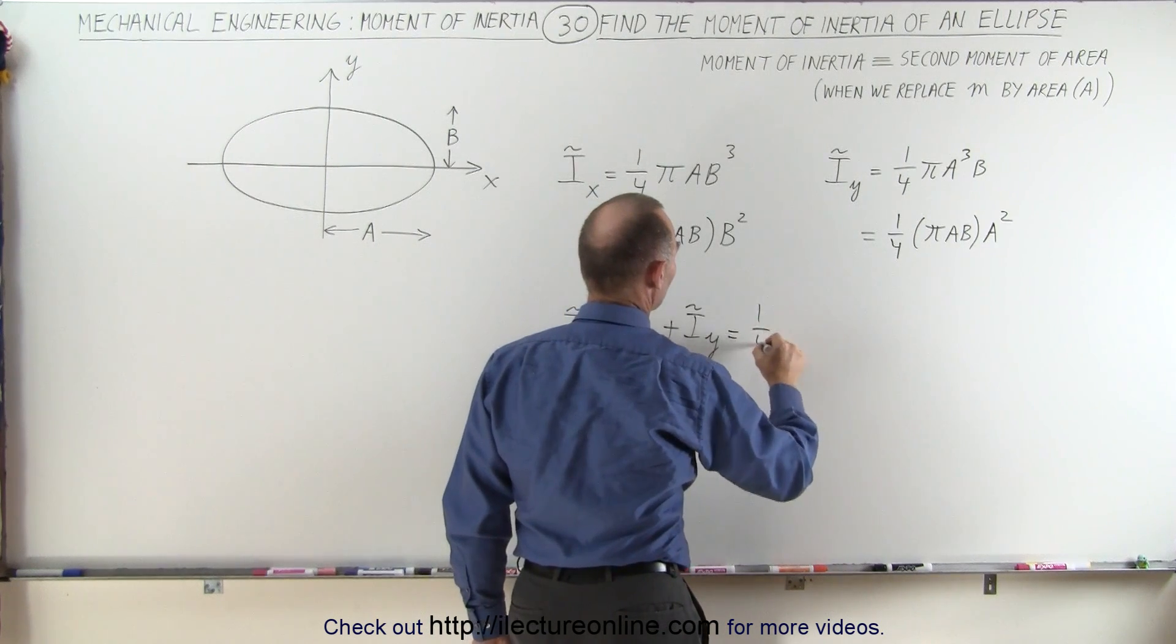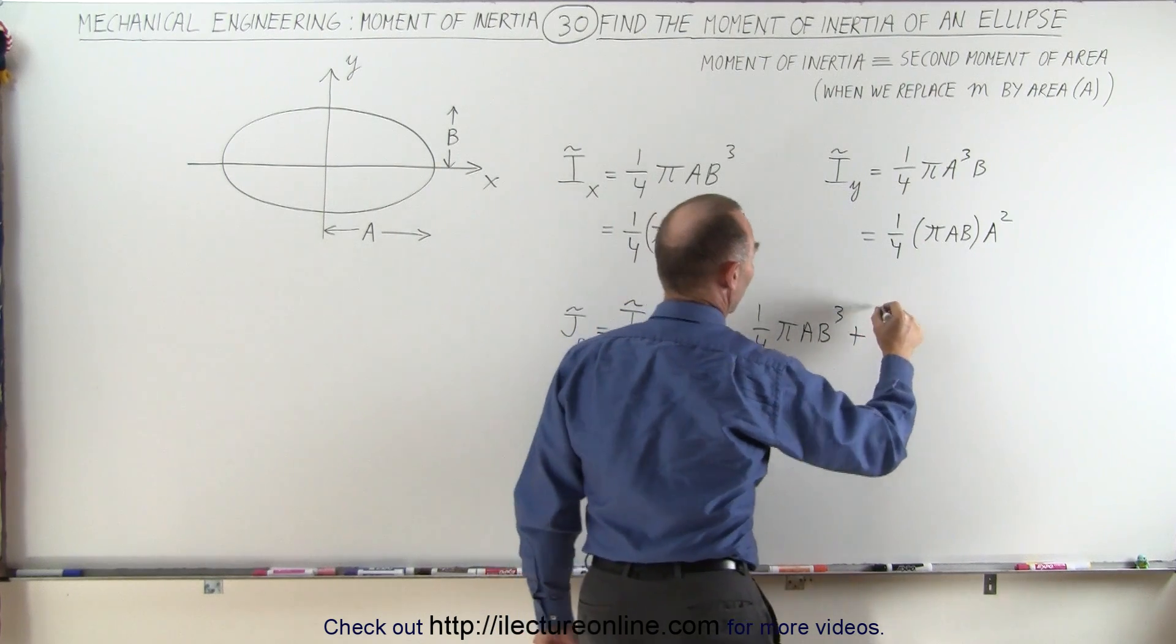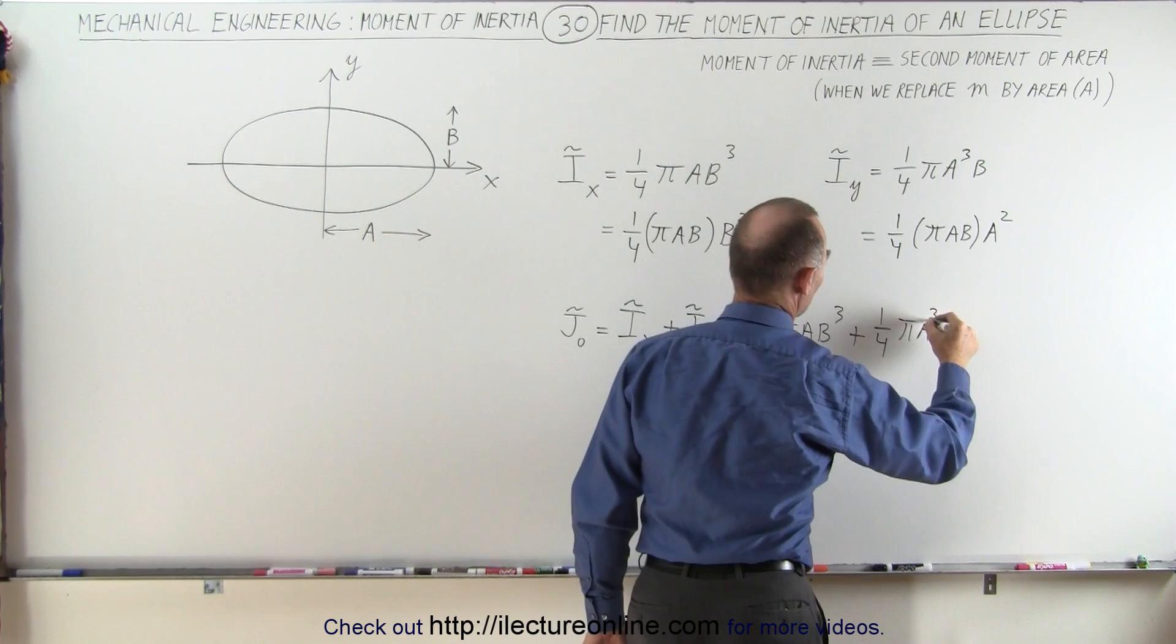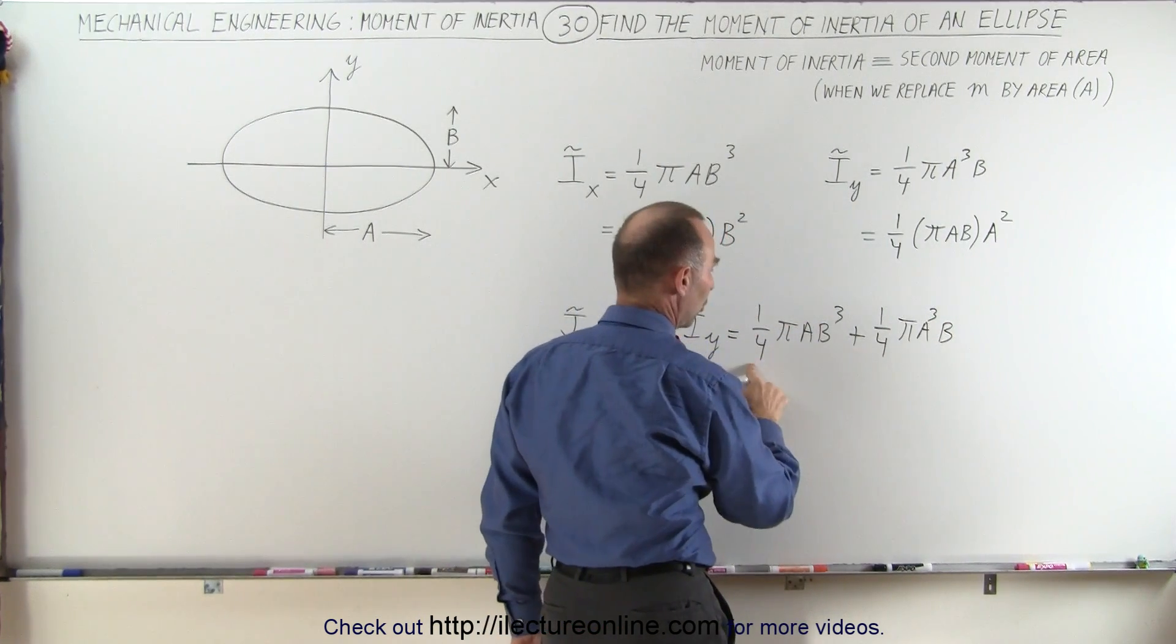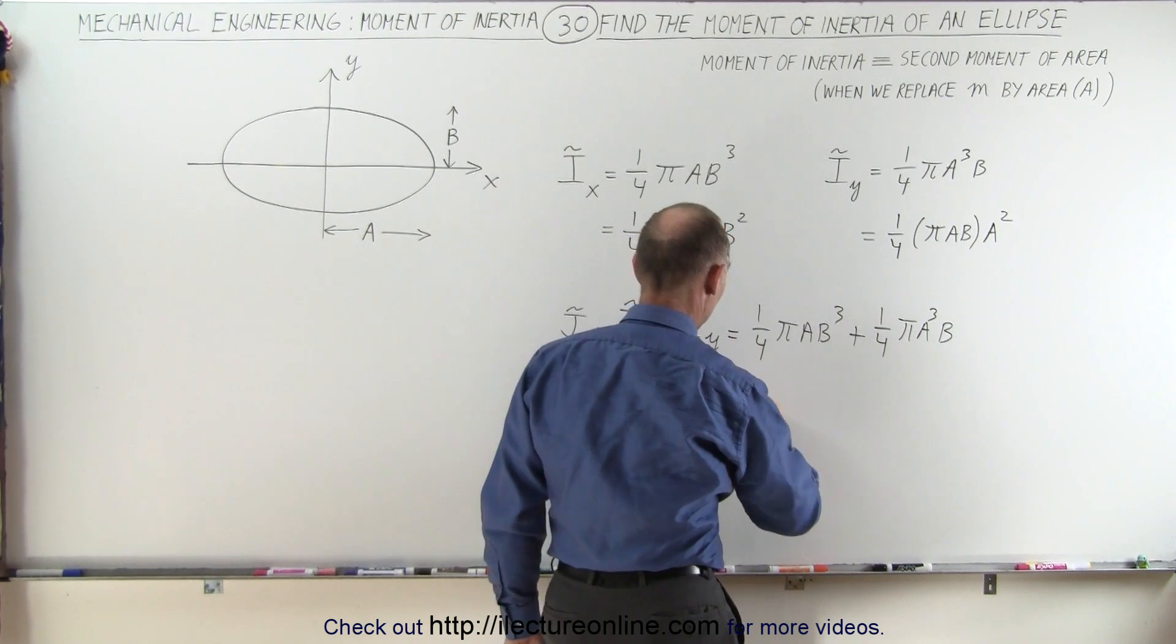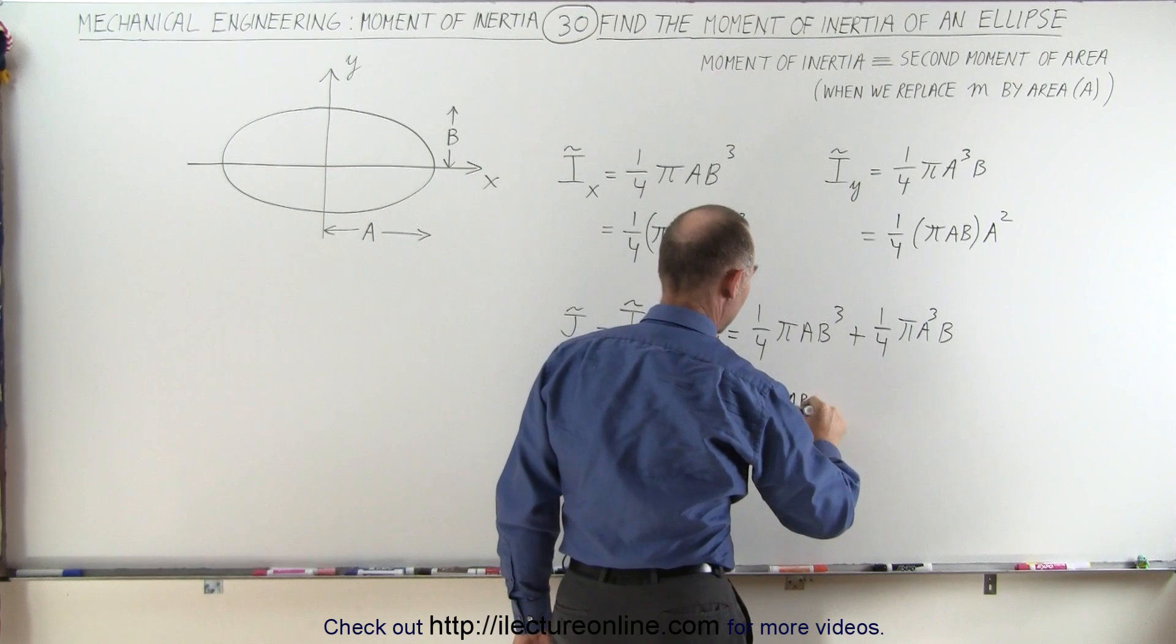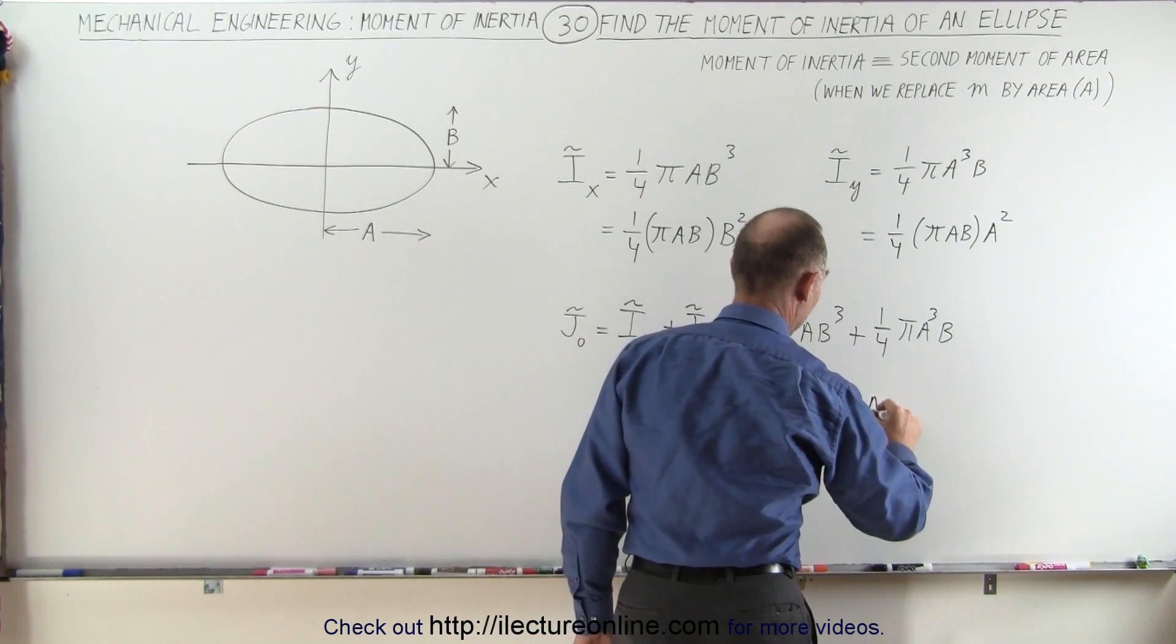one-quarter pi a b cubed plus one-quarter pi a cubed b. And notice, we have a common factor of one-quarter pi a and b, so we can pull that out. This is equal to one-quarter pi a b, and then we're left with b squared plus a squared.